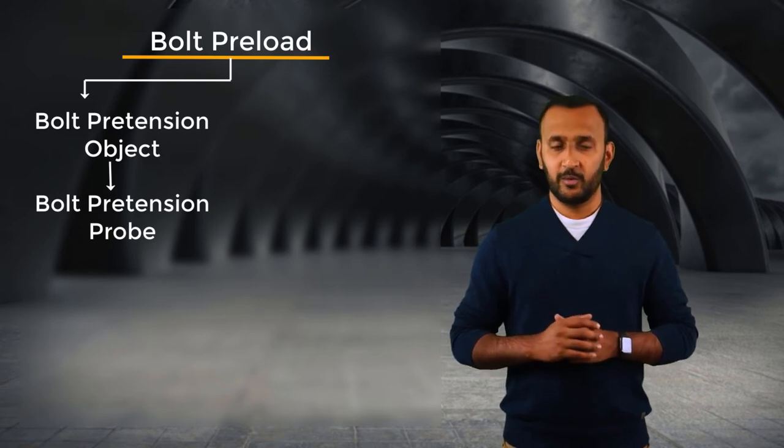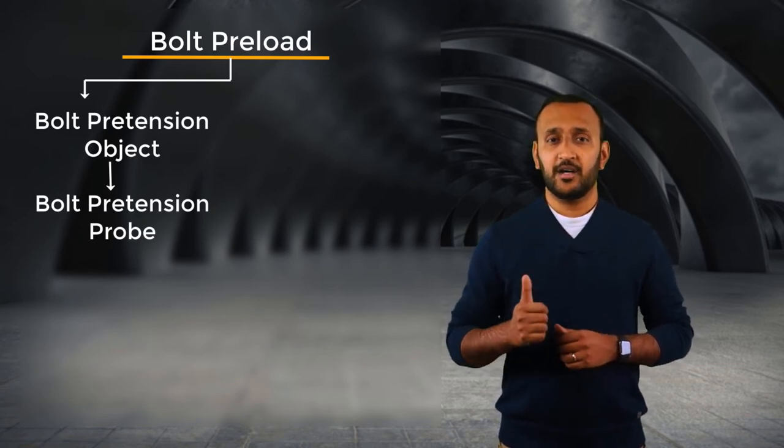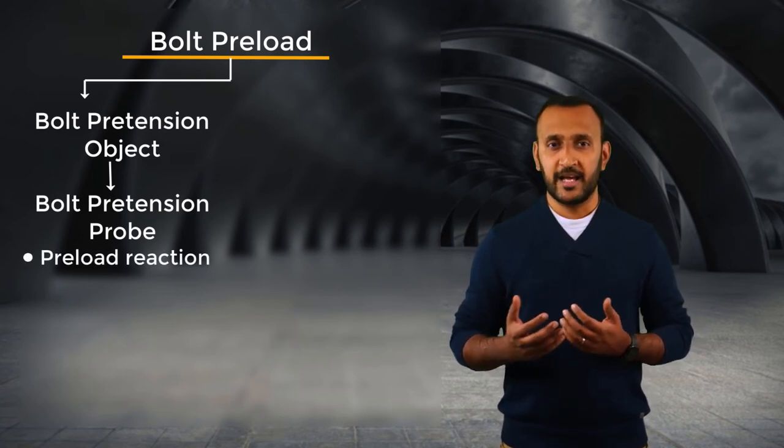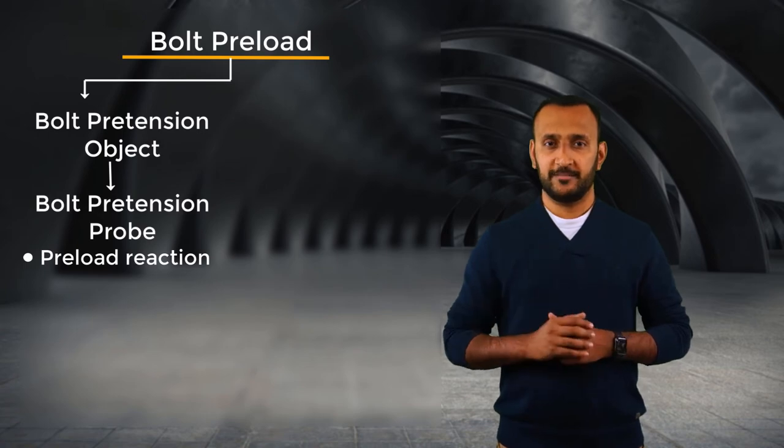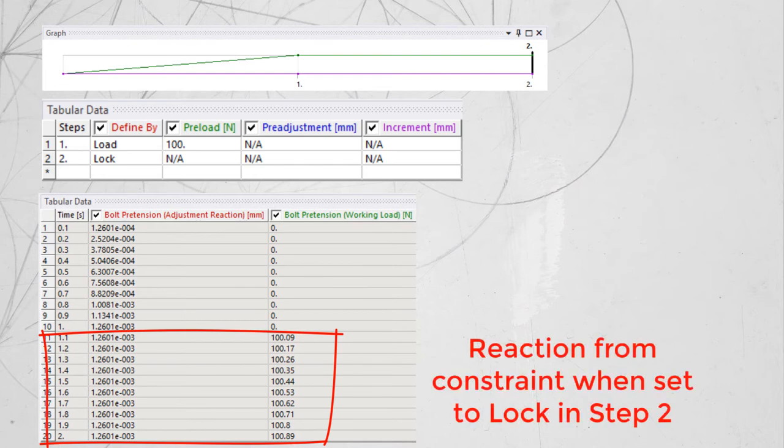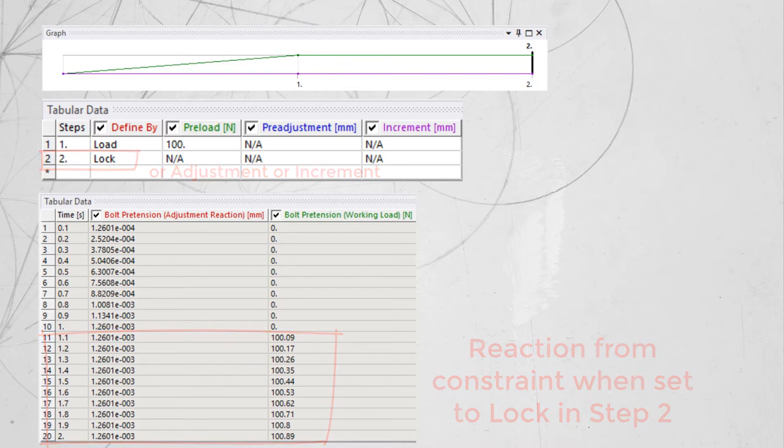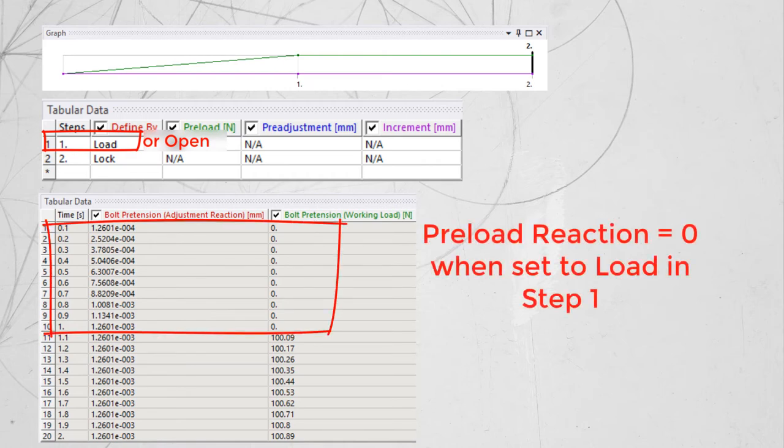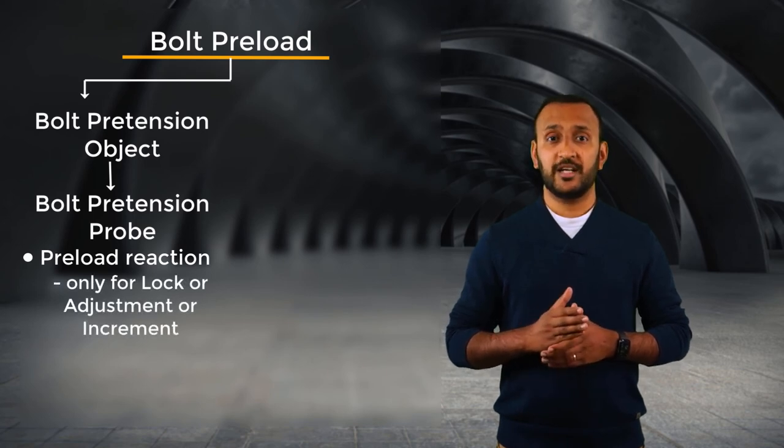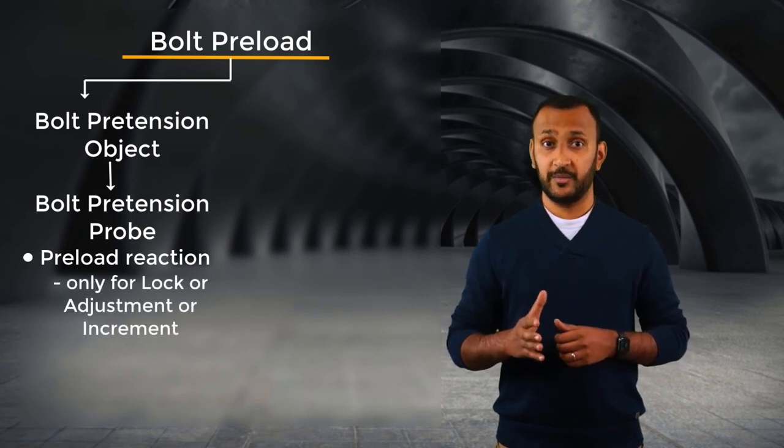The bolt pretension probe reports two quantities: workload or preload reaction, which is essentially the sum of all the forces acting through the pretension cut. It is the reaction from the constraint that is applied when a bolt is either specified as lock, adjustment or increment. When it is set to load or open, the constraint is not active and therefore it reports a zero value during these steps. Which is why this result is applicable only for load steps when the preload is set to either lock, adjustment or increment.